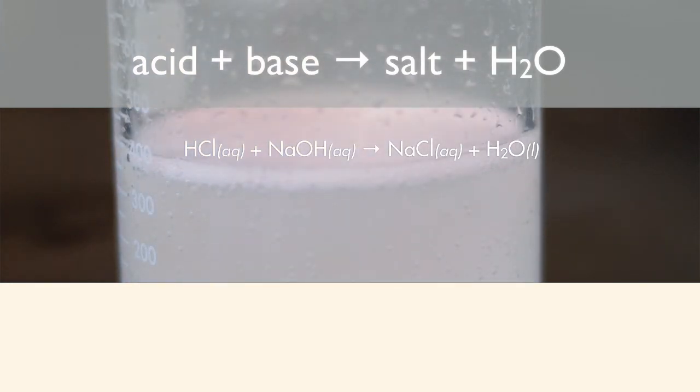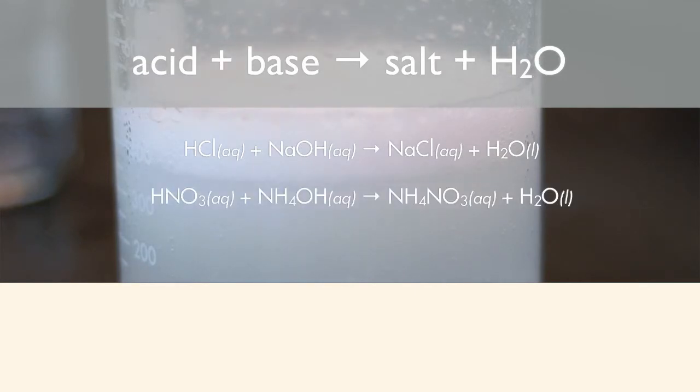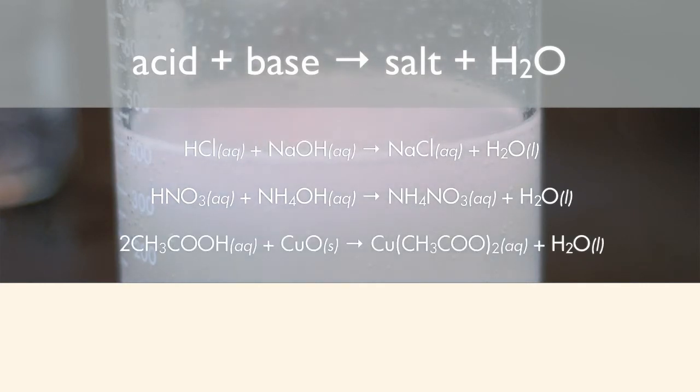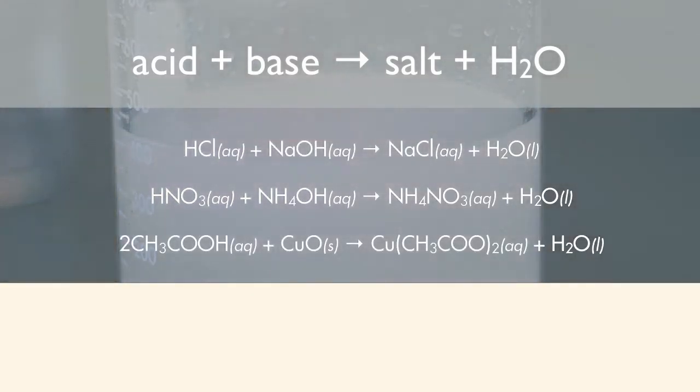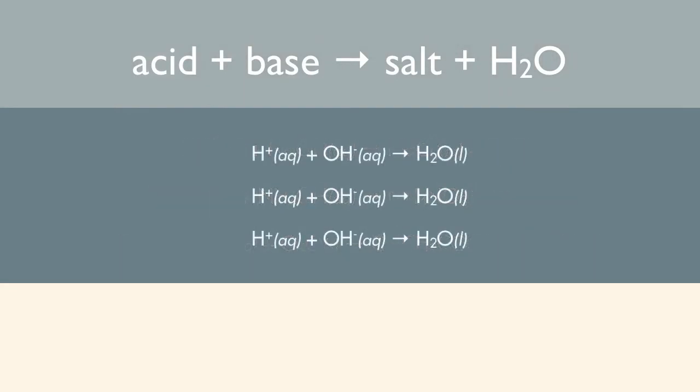And sodium here is the metal, which would form a cation after the sodium hydroxide dissociates, and that will stick together with a chloride ion that forms after the hydrochloric acid dissociates. The same thing here happens with nitric acid and ammonium hydroxide. And then here we have acetic or ethanoic acid again with copper oxide. And these also simplify, like the last class did, where we just have hydrogen and hydroxide forming water. And everything else is just a spectator.